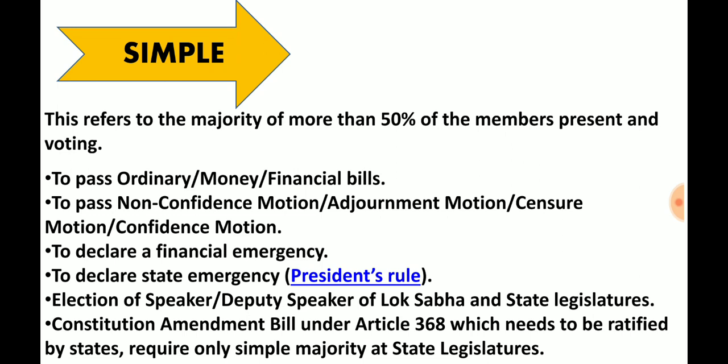Now applying simple majority to Parliament: 545 is the total strength. If 45 people are absent, then 500 people are present. 50% of 500 is 250, so simple majority means more than 250 — that means 251.